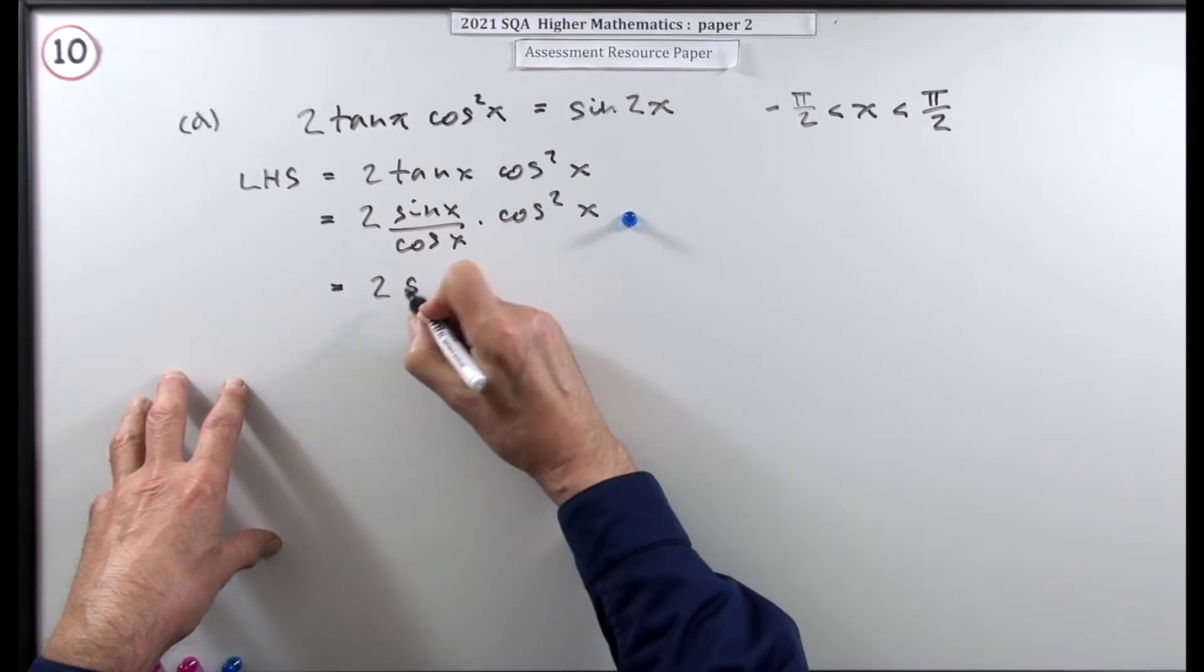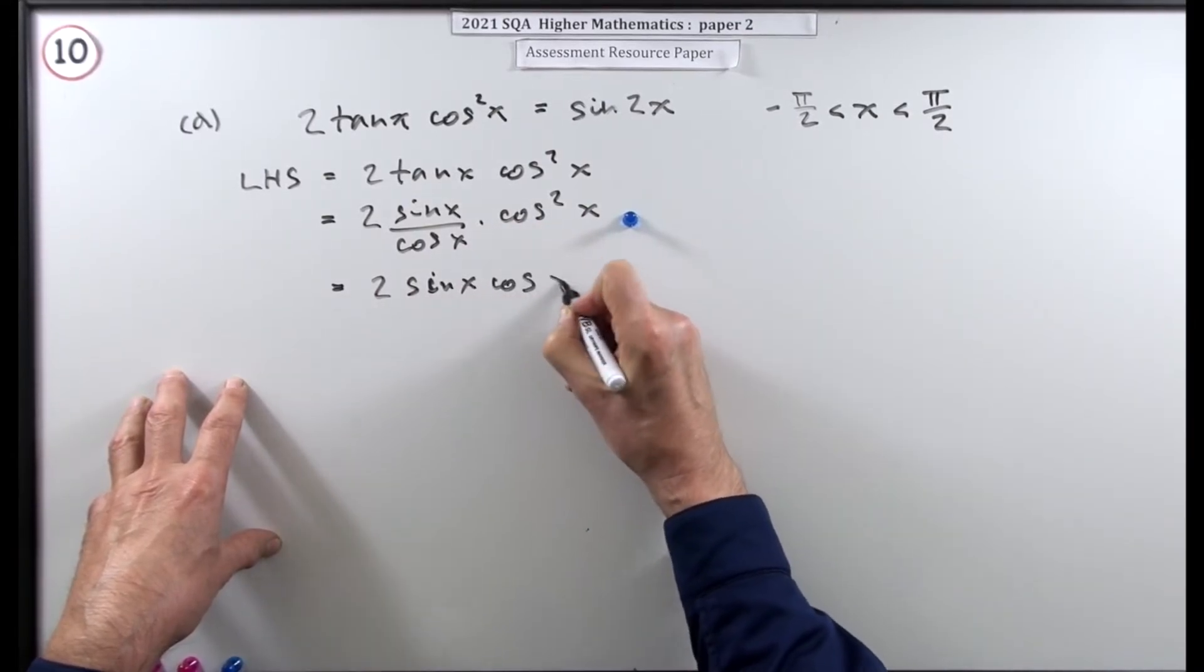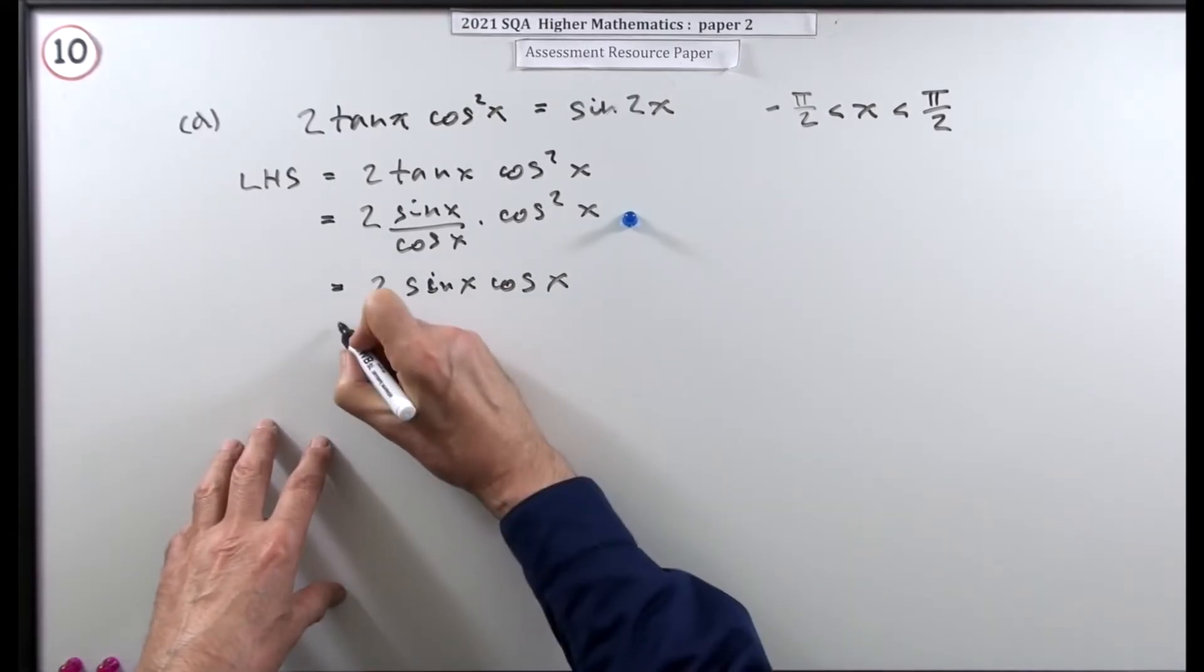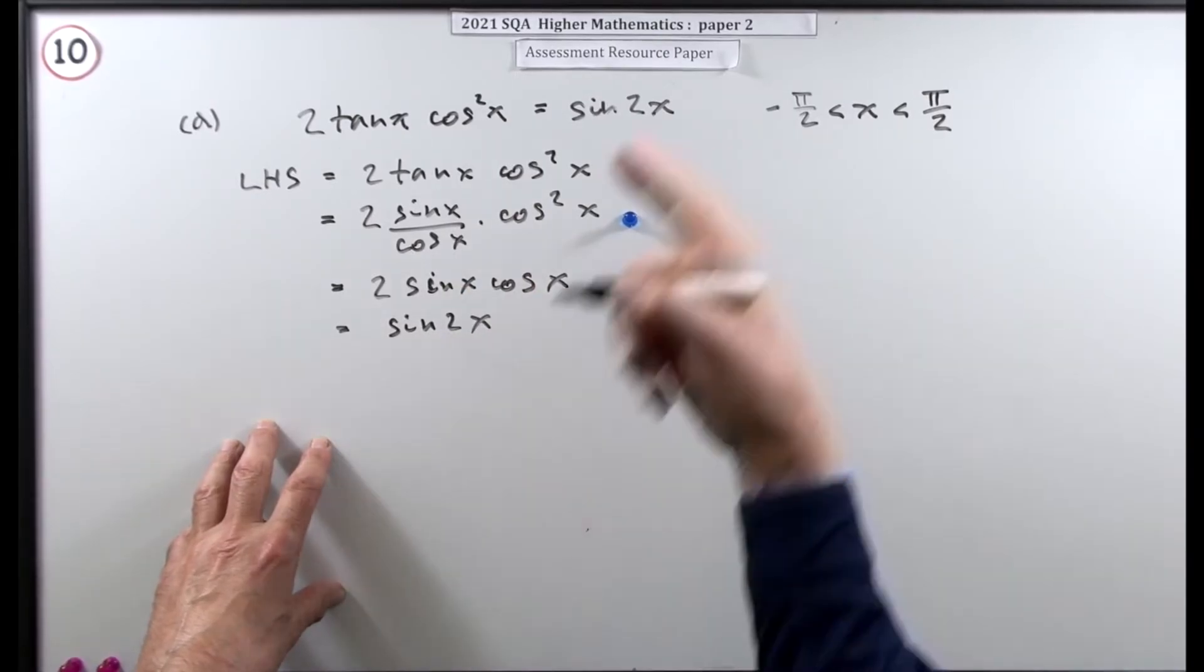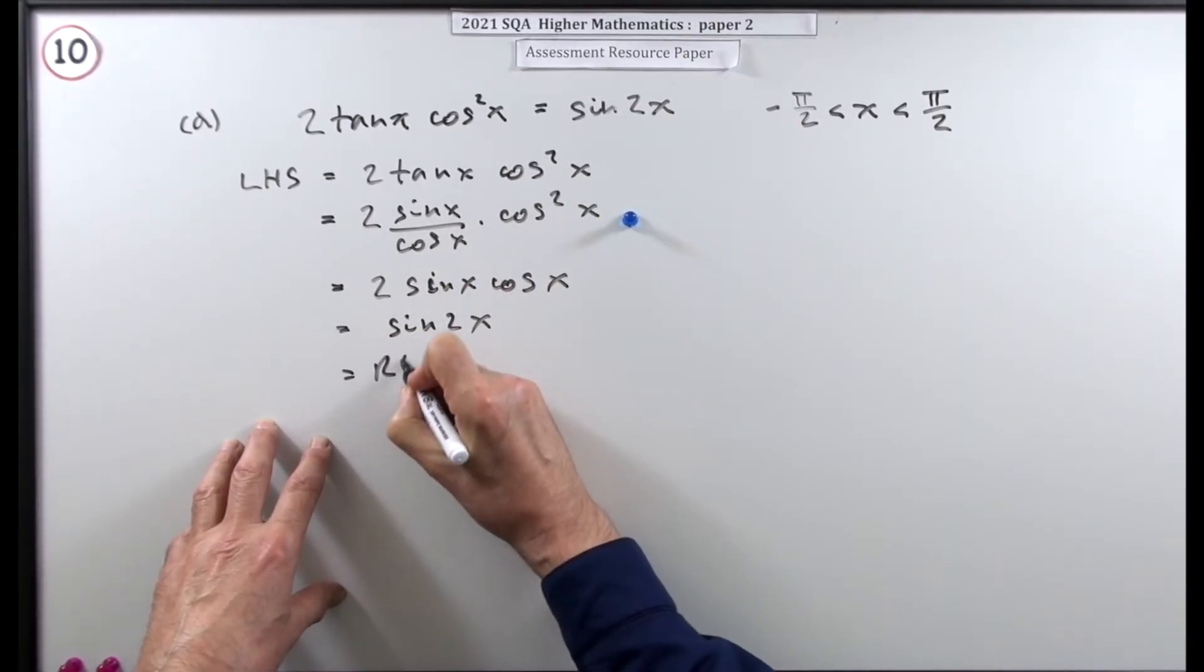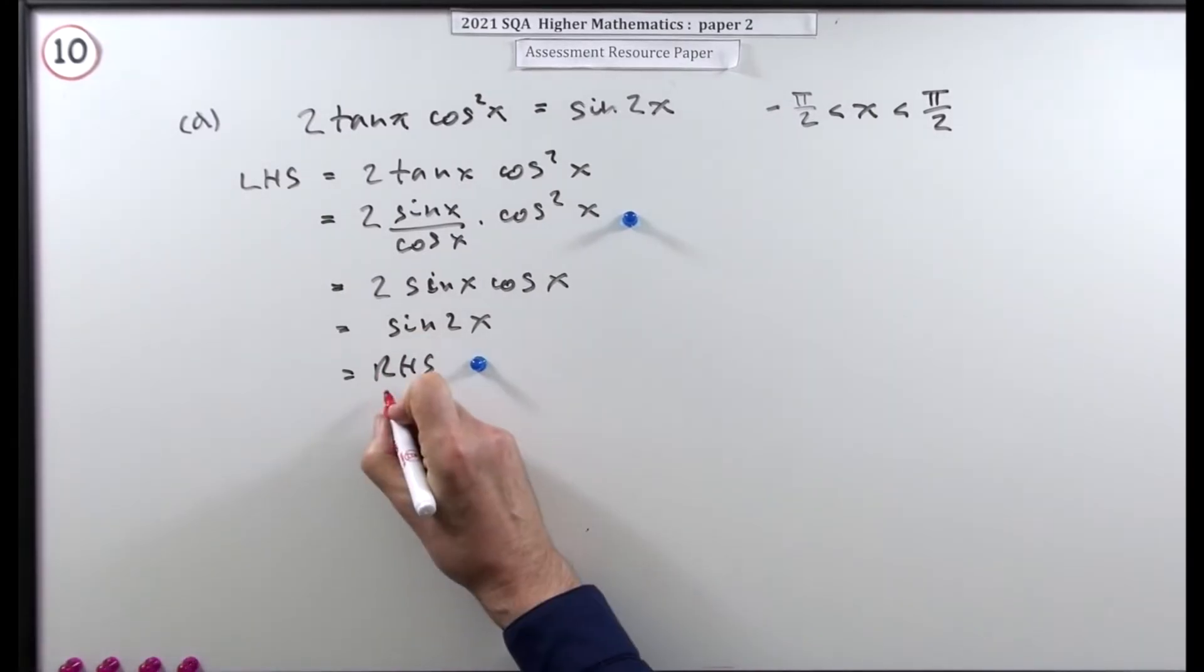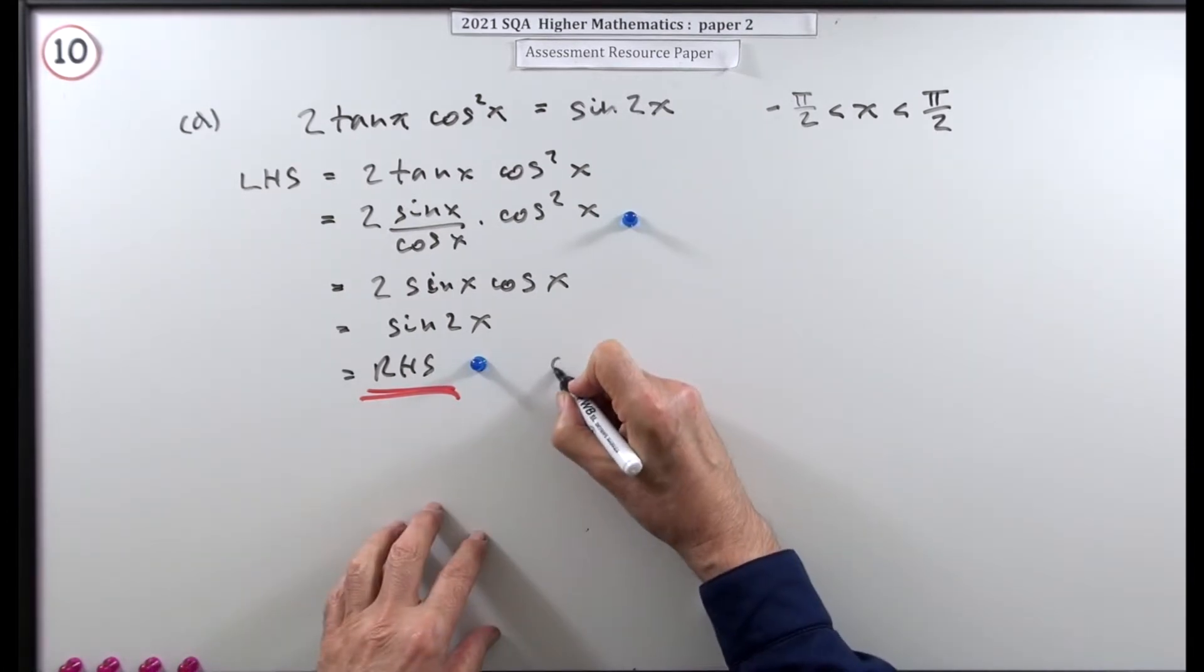Now that cancels down and it comes down to 2 sin x cos x. But you recognize 2 sin x cos x. That's the pattern for the expansion of sin 2x. And that's precisely what you want. So equals right hand side. There it is. And if you wanted to rub it in you could say QED.